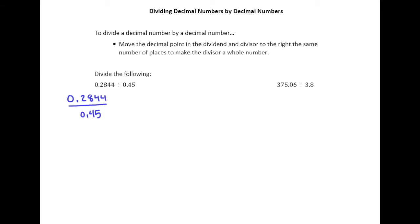And so we can do that by multiplying by 100 on bottom. Remember, multiplying by 100 moves the decimal point two places to the right.